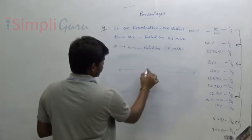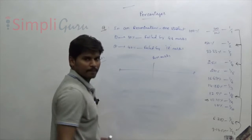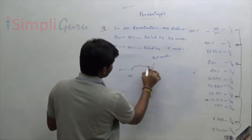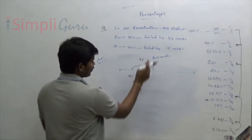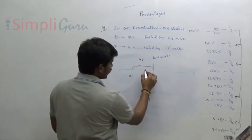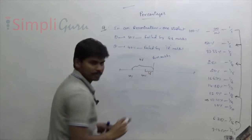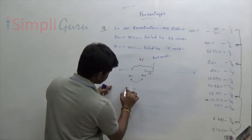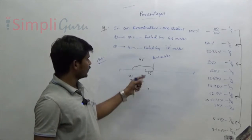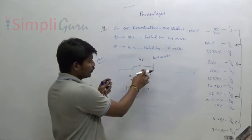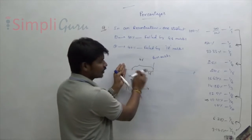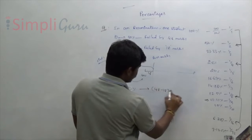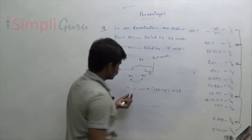For the shortcut: take total marks as 100%, pass mark somewhere in between. One got 30% and failed by 48 marks — 30% is below pass mark. Another got 40% and failed by 18 marks — 40% is also below pass mark but closer. From 30% to 40% is 10%. Since both failed, we subtract the mark differences: 48 − 18 = 30. So 10% = 30 marks.